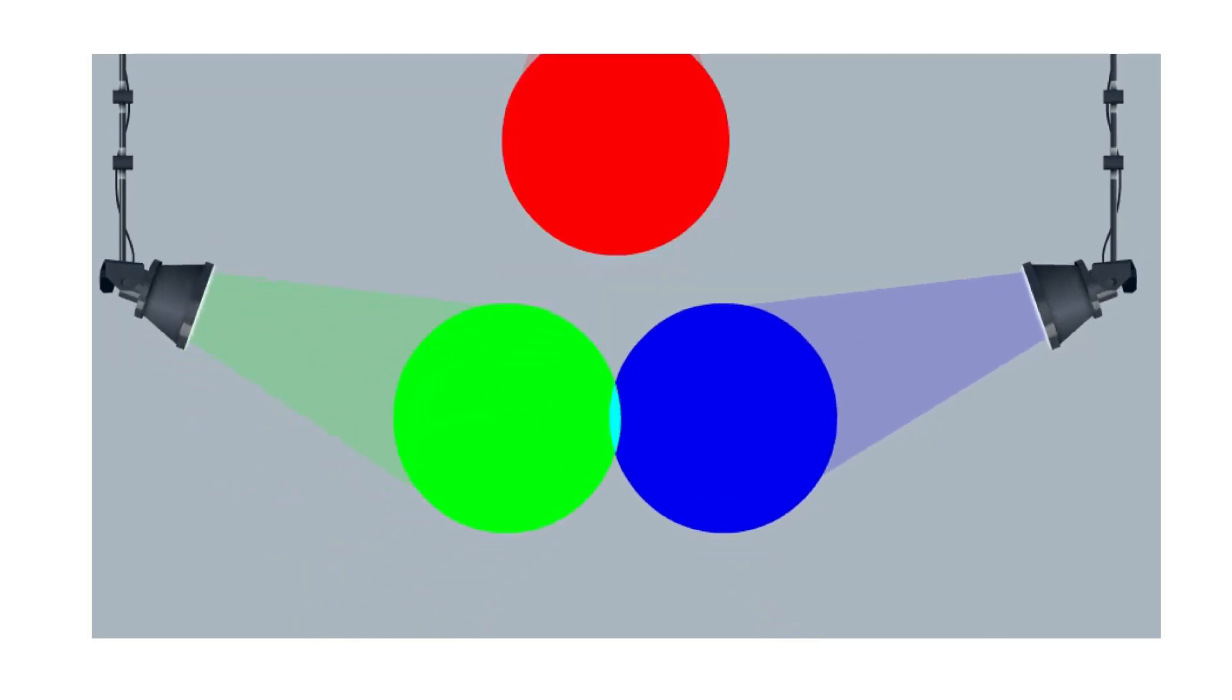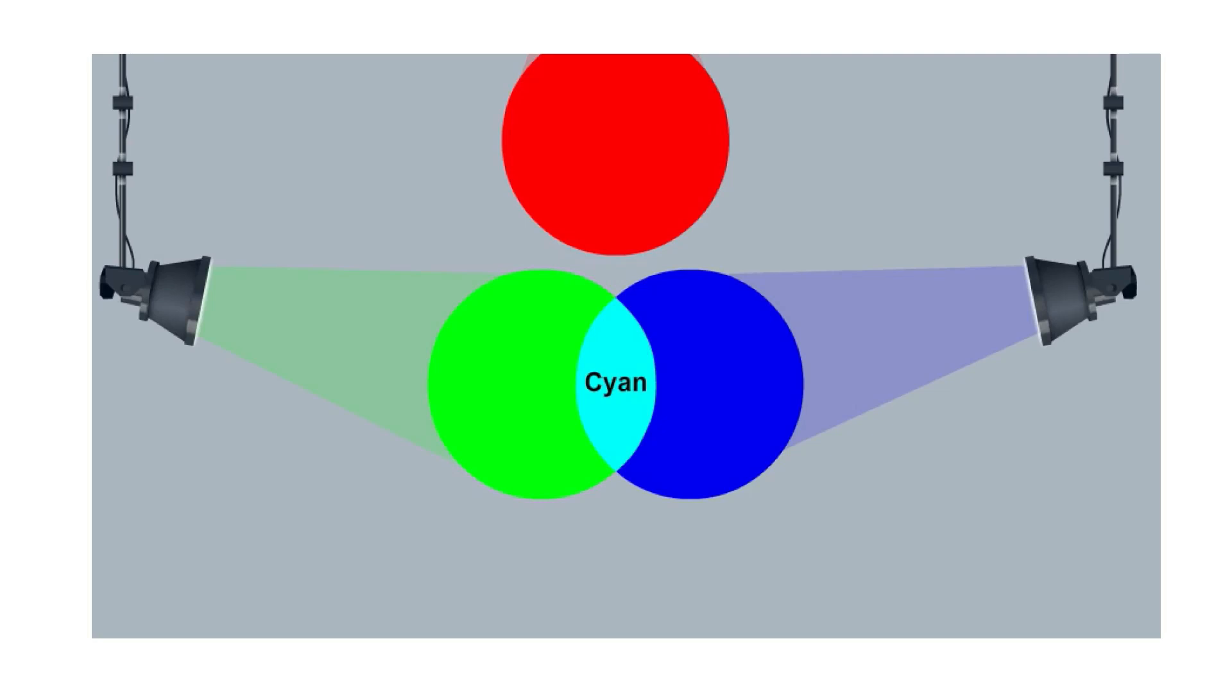When green and blue lights are mixed together, cyan light is produced. Warna cyan terbentuk daripada pencampuran warna hijau dan warna biru.